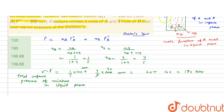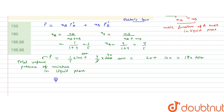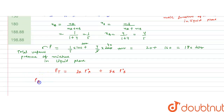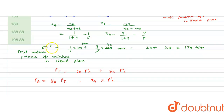But we have to calculate the total vapor pressure of the distillate, so: P_distillate = YA × P°A + YB × P°B, where YA and YB are mole fractions in the vapor phase. YA can be calculated from: partial pressure of A = YA × P_total = XA × P°A. So YA = (XA × P°A) / P_total.